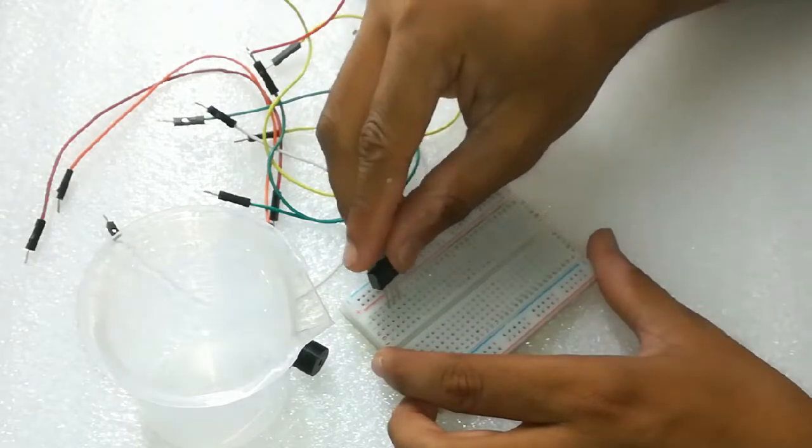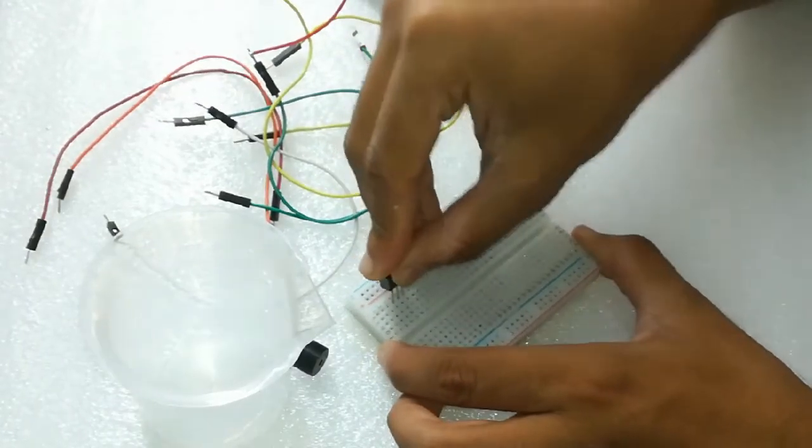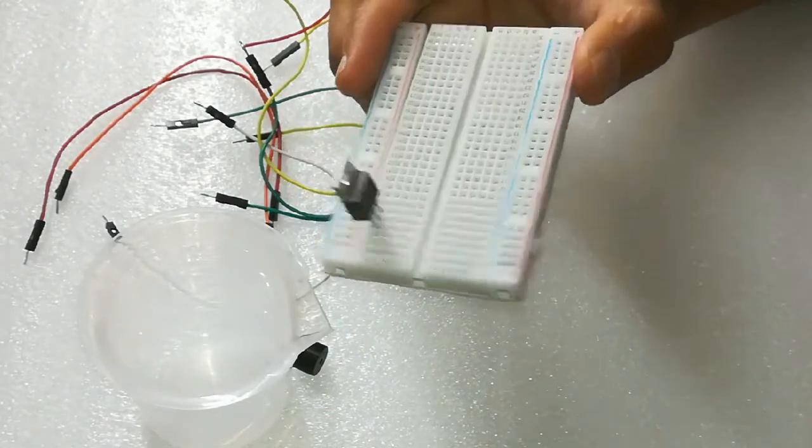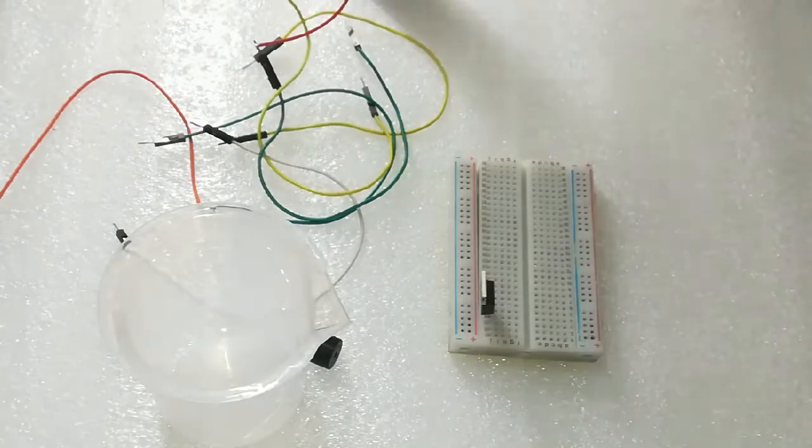We will connect our MOSFET in the breadboard in 3 different rows so that we can make the connections easily. Now, you can see all the 3 pins are being connected in the breadboard.